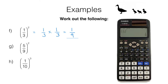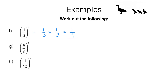Now have a go at question G for yourself. Here's what you should have found: working by hand, 5 ninths multiplied by 5 ninths is 25 over 81. Or you could simply type 5 ninths on your calculator in brackets and then hit the x squared button to get the same answer.